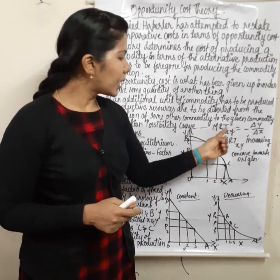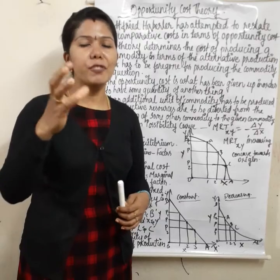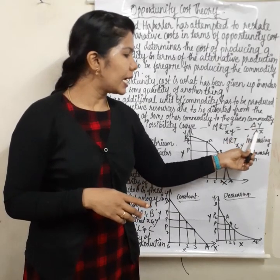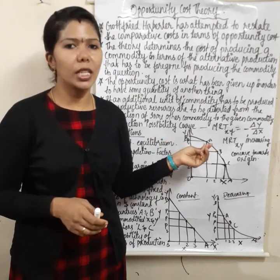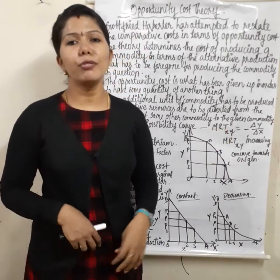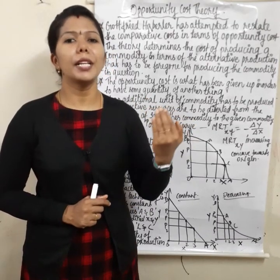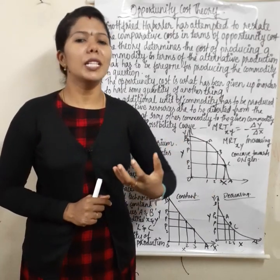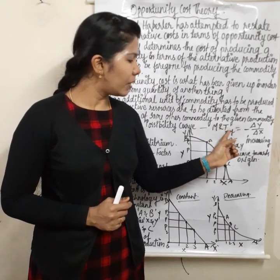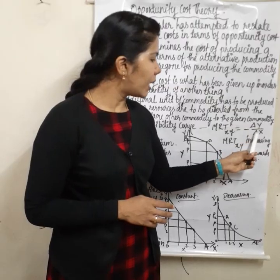The MRT XY — marginal rate of transformation — is equal to minus delta Y by delta X. We will substitute one factor for another. The marginal rate of technical substitution is the rate at which one factor is substituted for another factor. X for Y will be sacrificed, equal to minus delta Y by delta X.